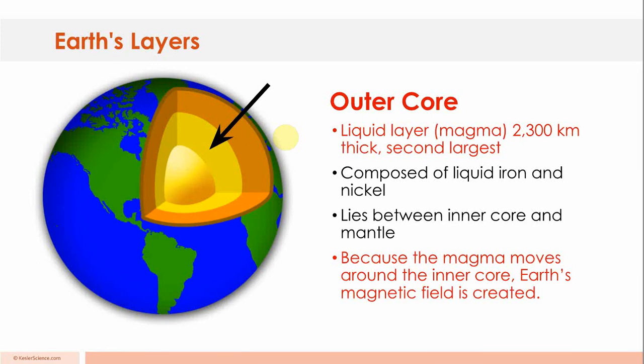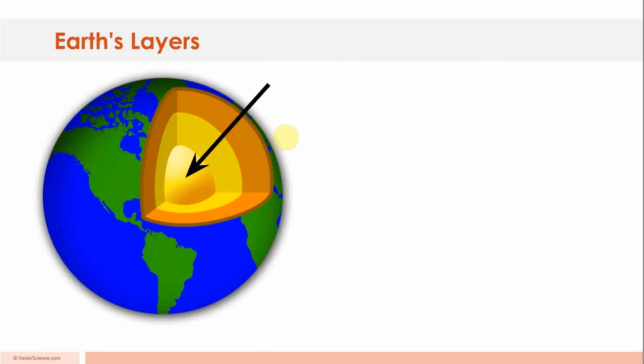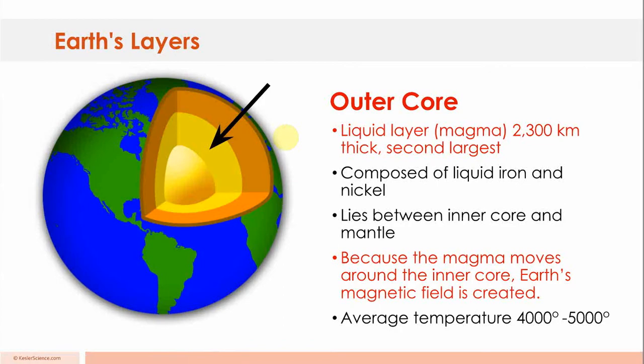Think about rubbing a piece of iron on a magnet. You can magnetize it that way. It's pretty cool. Oh, I didn't say average temperature. 4,000 to 5,000 degrees.